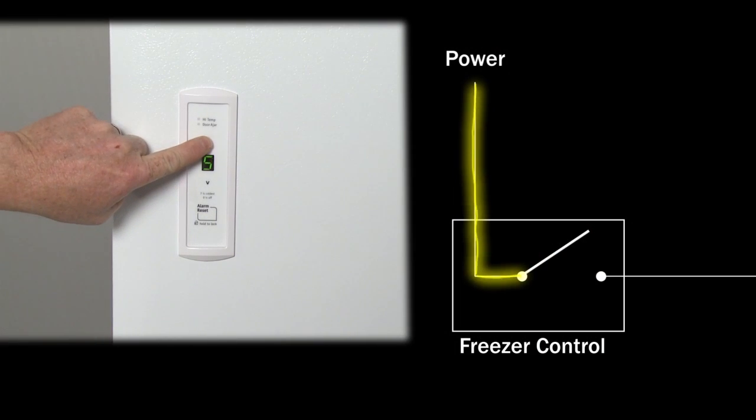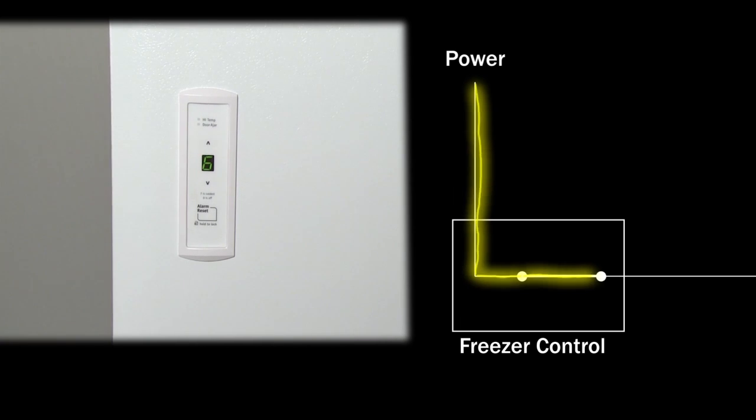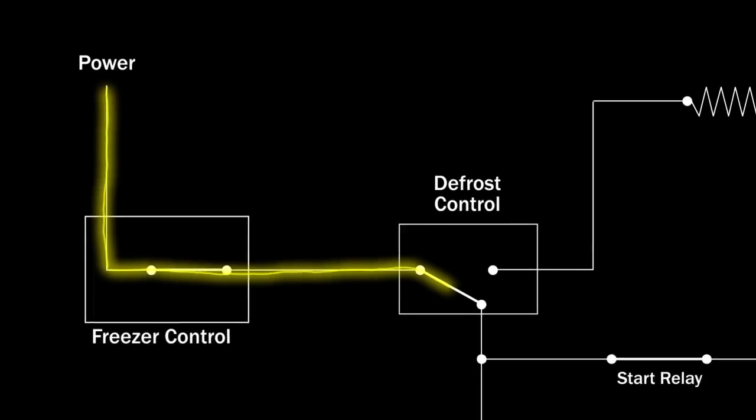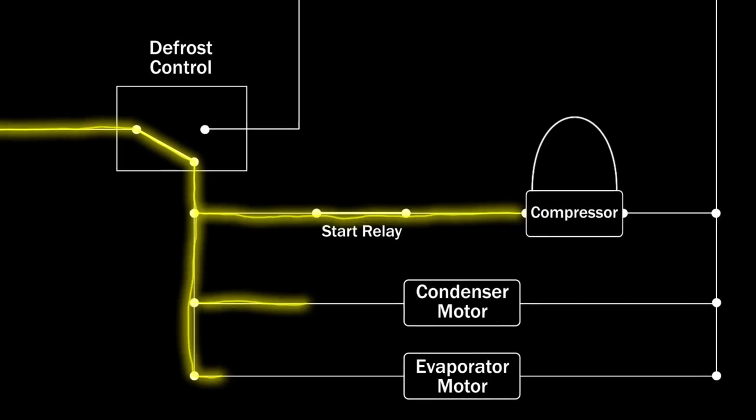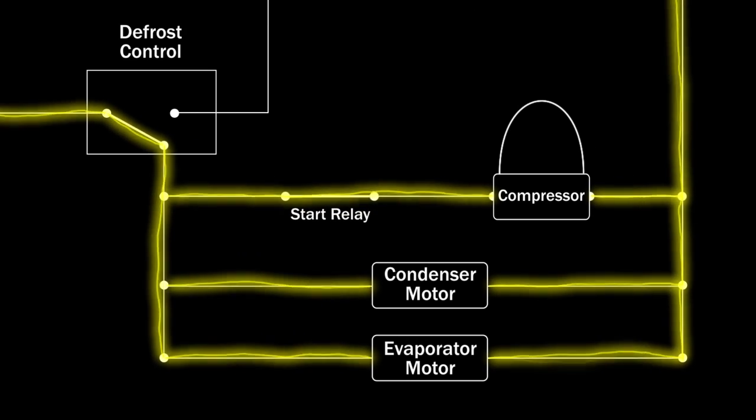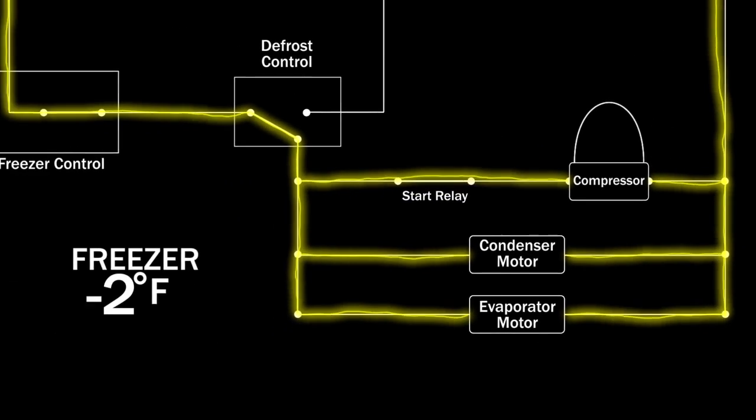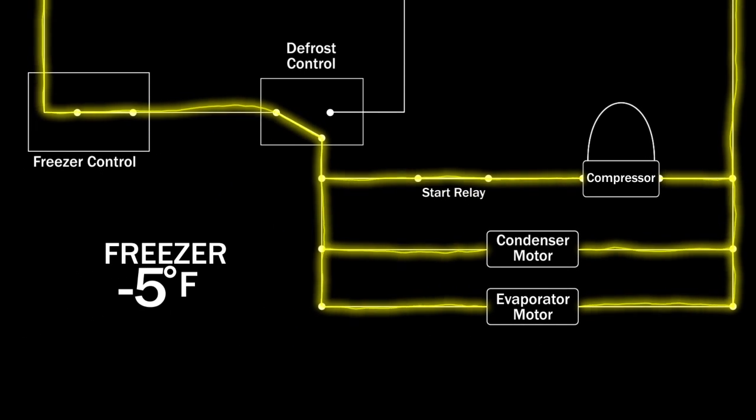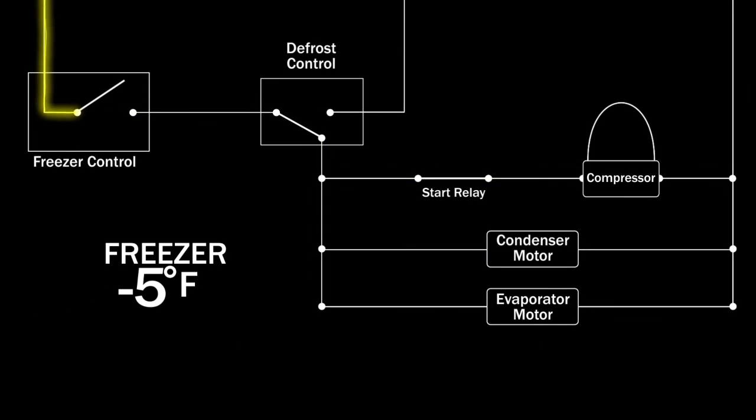To cool the freezer, the control allows voltage to travel to the start relay and compressor, as well as to the condenser fan motor and evaporator fan motor, if applicable. Once the proper temperature is reached, the control shuts off the voltage to the cooling system. Keep in mind that it's normal for the temperature to vary throughout this cycle.